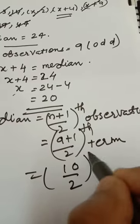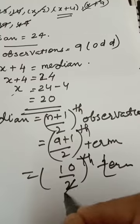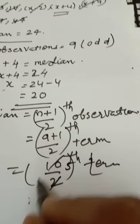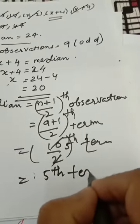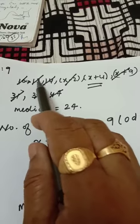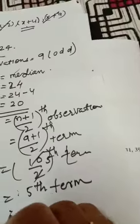Otherwise term you can write, that is 10 by 2th term. Cut it, 5, that is 5th term. Count it, which is 5th term? 1, 2, 3, 4, 5. 5th term is x plus 4.